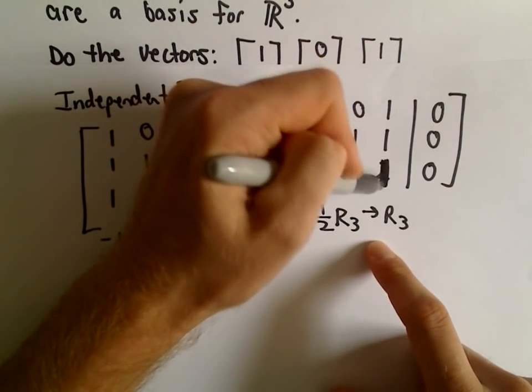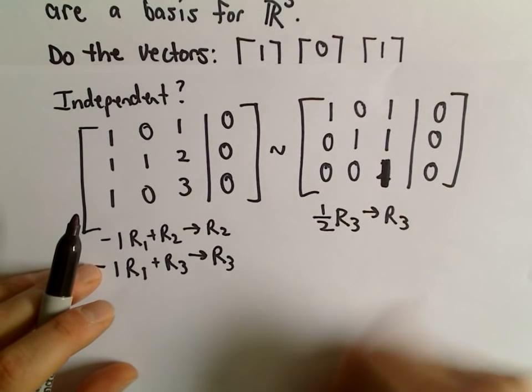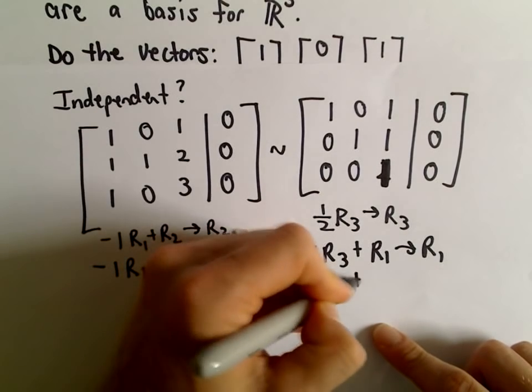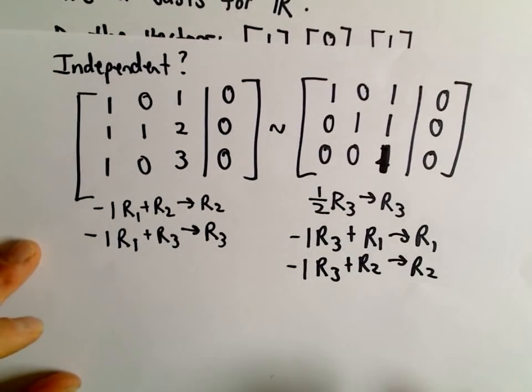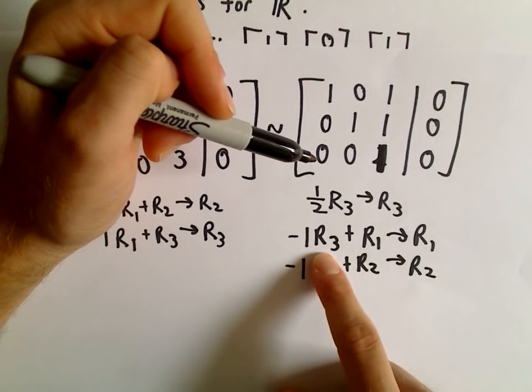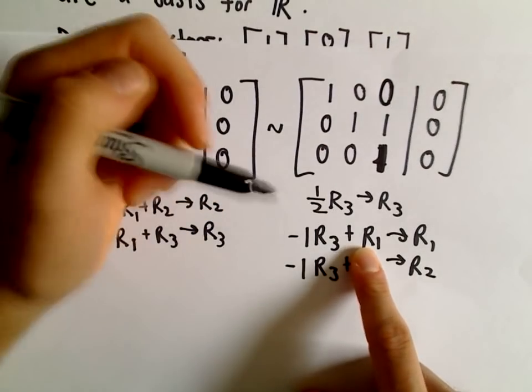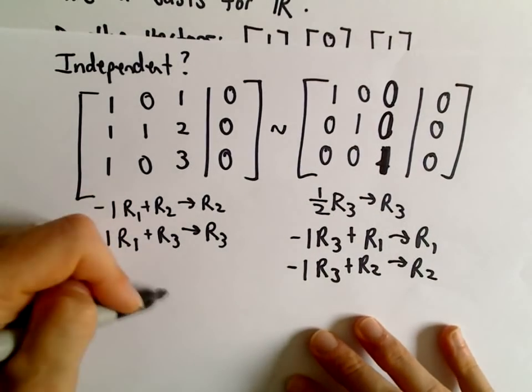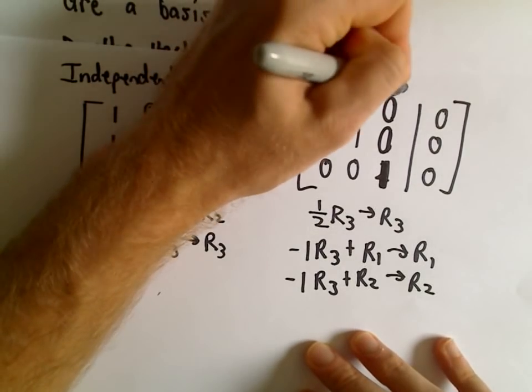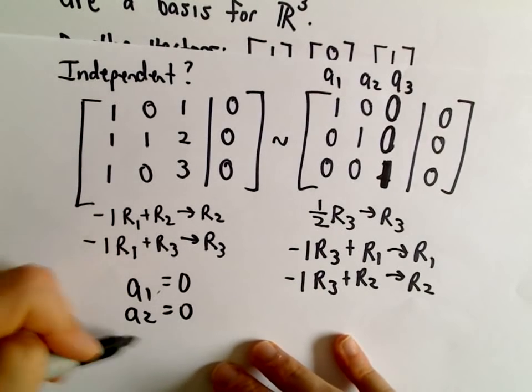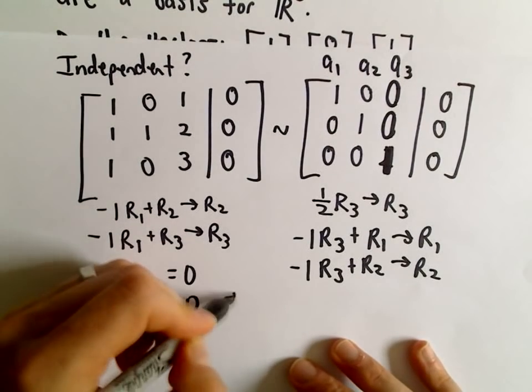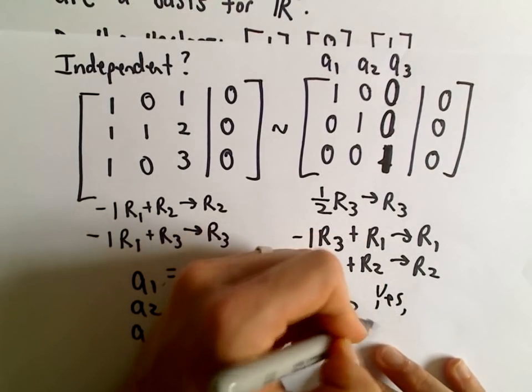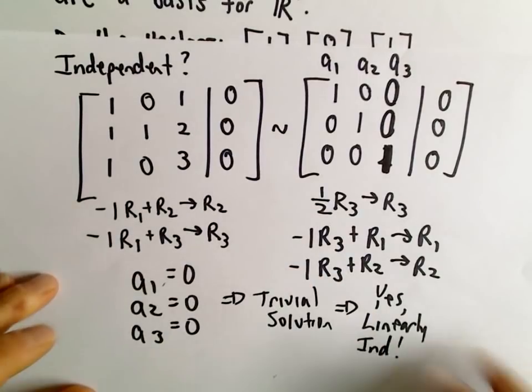So instead of rewriting this all one more time, if we divide everything by 2, the only thing that's going to happen is the 2 will turn into a 1. And now we can just do negative 1, row 3, add that to row 1 to get our new row 1. And negative 1 times row 3, add that to row 2 to get our new row 2. And again, in the sake of being brief here, the only thing that's going to happen is if we take negative 1 times row 3 and add it to row 1, we'll get negative 1 plus 1, which will make that into a 0. If we do negative 1 times row 3 and add it to row 2, it'll make that 1 also into a 0. And this now tells us that our solution would only be if our constants a1, a2, a3 are all equal to 0. So it says a1 would have to equal 0, a2 would have to equal 0, and a3 would also have to equal 0, which tells us we only have the trivial solution. And since we only have the trivial solution, that means yes, they are linearly independent.